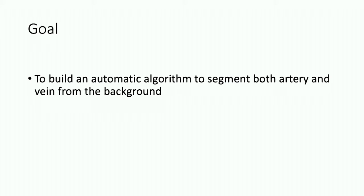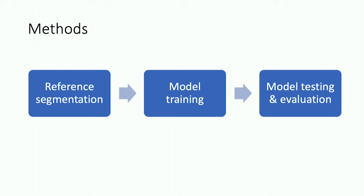Thus, our goal is to build an automatic algorithm to segment both artery and veins at the same time from the pictures. We set up our method as follows: first, we need to generate reference segmentation for the subsequent evaluation for the model. Then we train the model, and finally we test the model to evaluate the model performance.